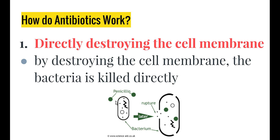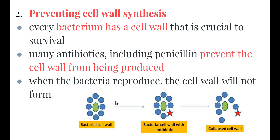So how do antibiotics work? Antibiotics work in a couple of different ways. Firstly, they work directly by destroying the cell membrane of the bacteria — by destroying the cell membrane, the cytoplasm and all of the cell contents leak out and the bacteria is killed directly. Secondly, antibiotics can prevent cell wall synthesis. Every bacteria has a cell wall that is crucial to its survival — it keeps everything contained and acts as a protective layer — and without the cell wall the bacteria do not survive.